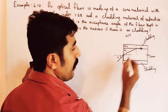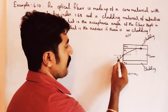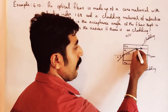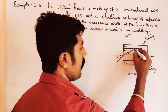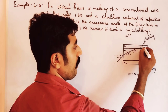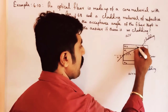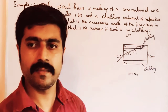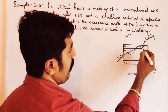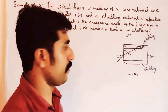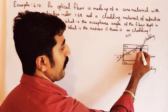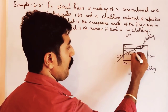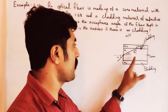Let us draw a normal. If you look at the surface, this is the incident ray, then it is the refracted ray. Looking at this boundary, this is the incident ray and this is the refracted ray. Here the refraction is 90 degrees — that is maximum refraction. The angle of incidence is equal to the critical angle.